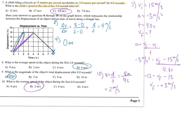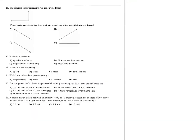Number eleven: figure out what these two components equate to as a single vector — that would be choice A. But what the question is actually asking is which vector produces equilibrium with these two forces. That's the opposite direction, so that'll be choice C. For our purpose of understanding vectors and their components, let's go with choice A.